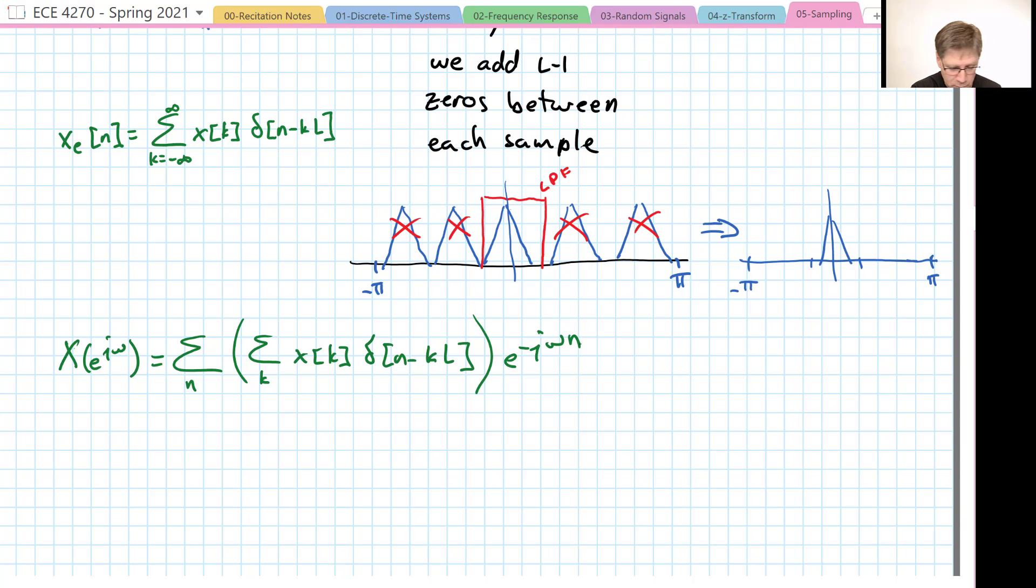Whenever we run into something like this we know exactly what to do: we swap the order. That gives us the sum over k times x of k, times the summation over n, delta n minus kl, e to the negative j omega n, which is just the Fourier transform of the shifted delta.